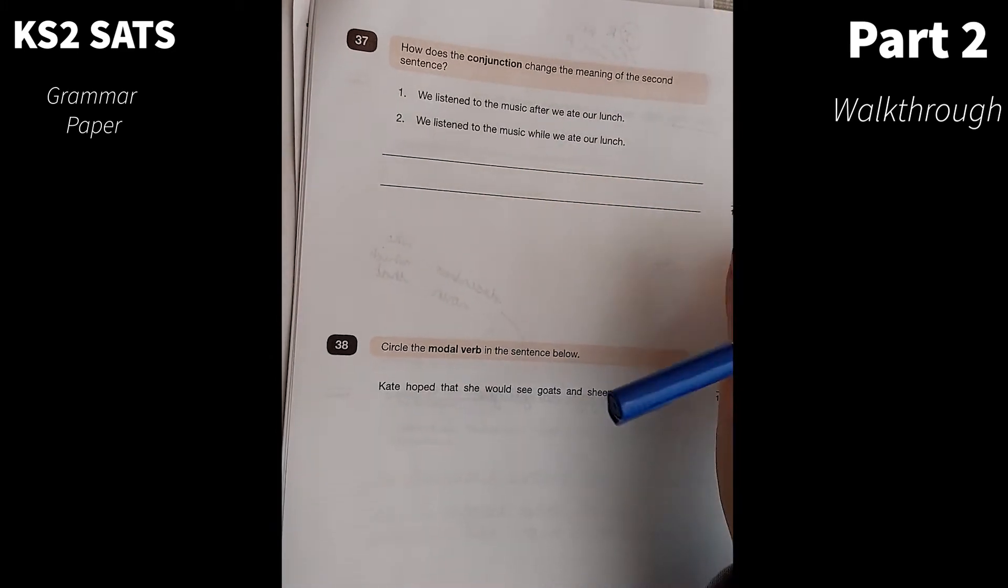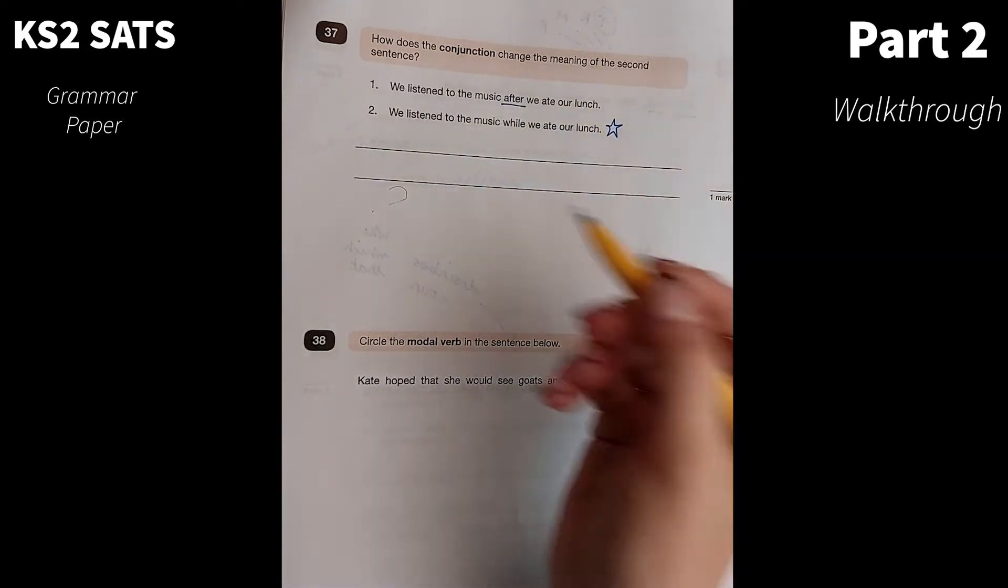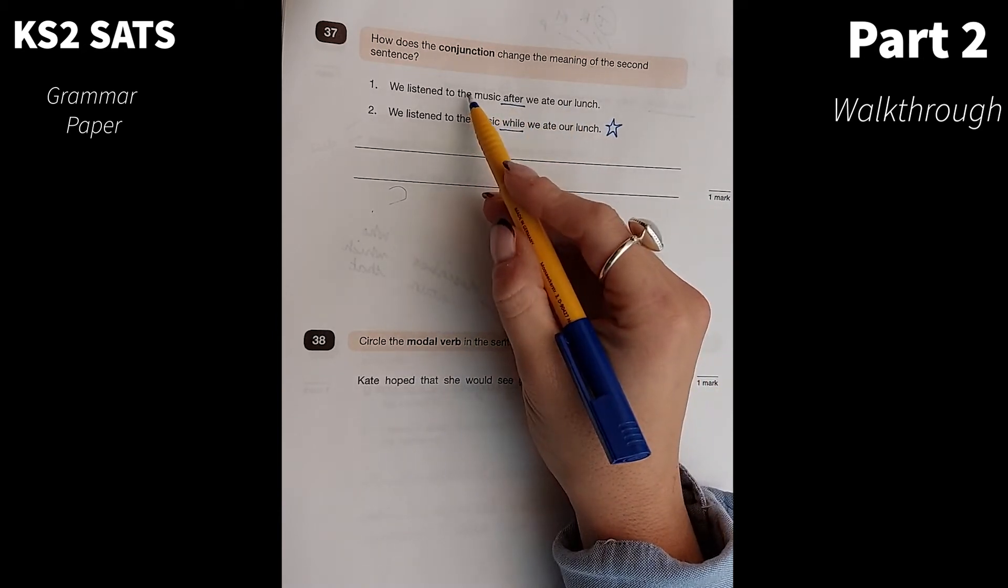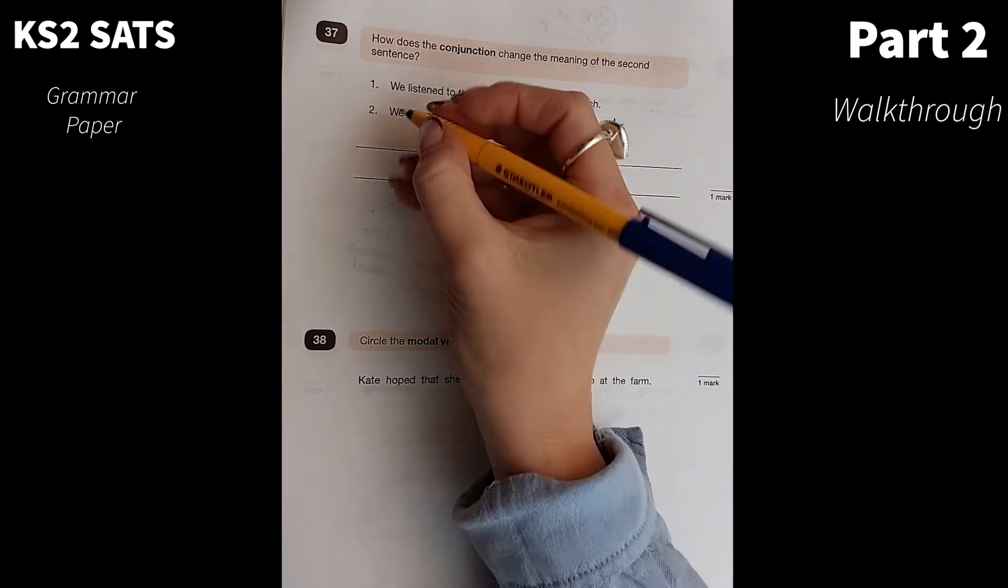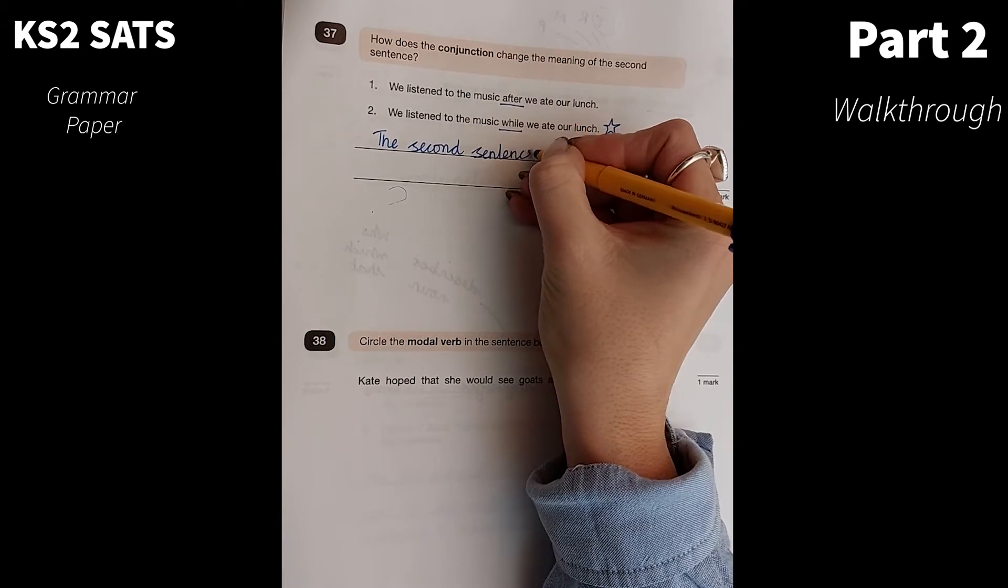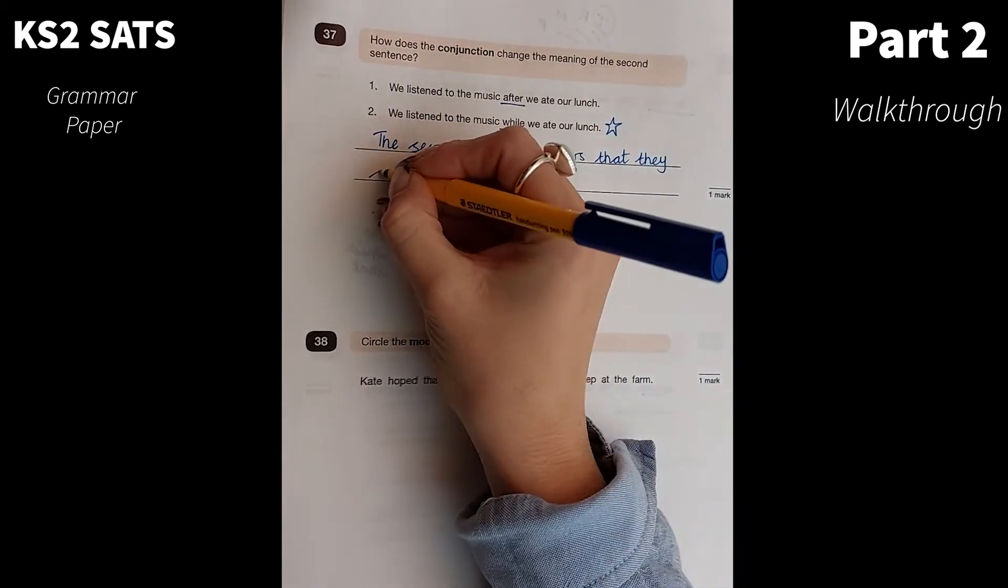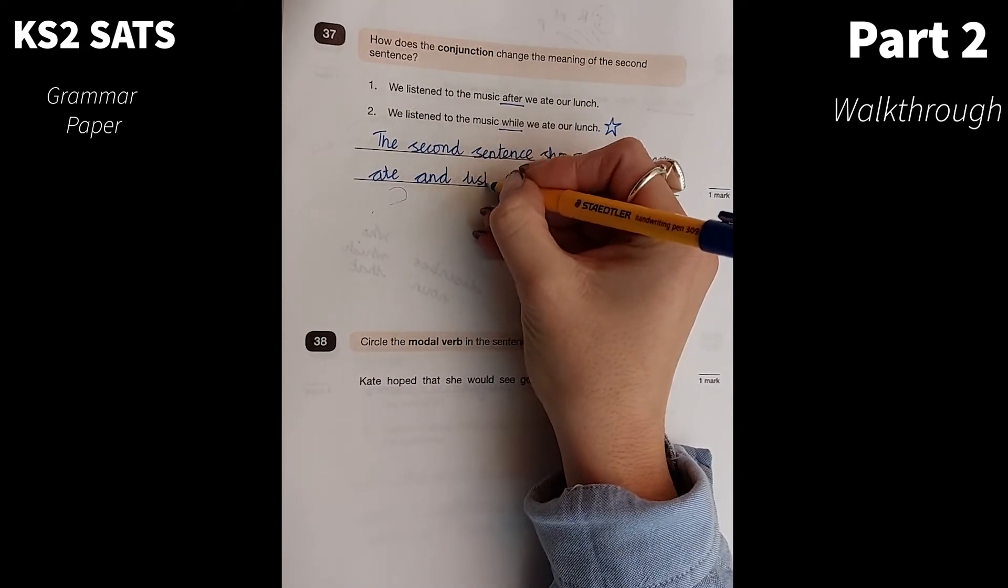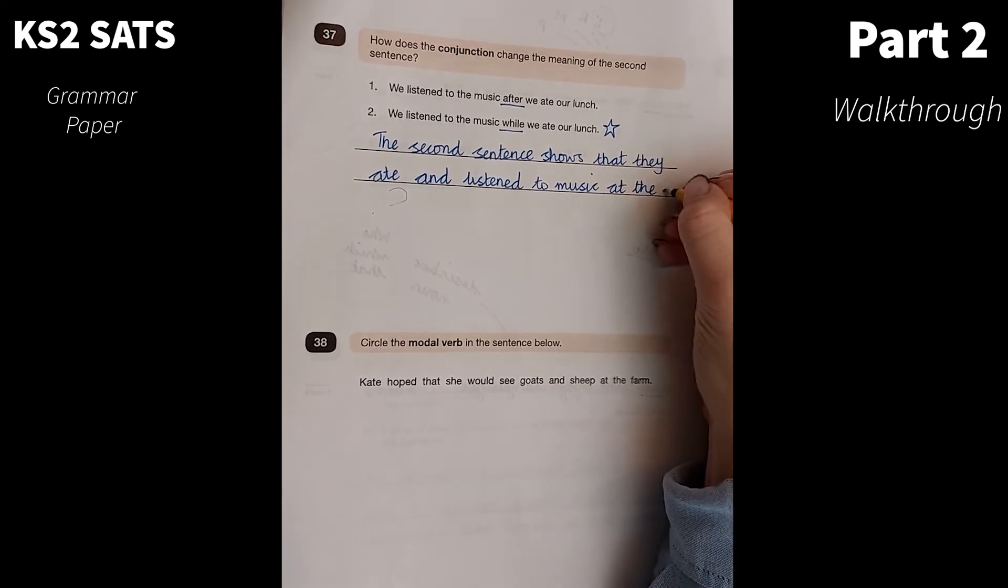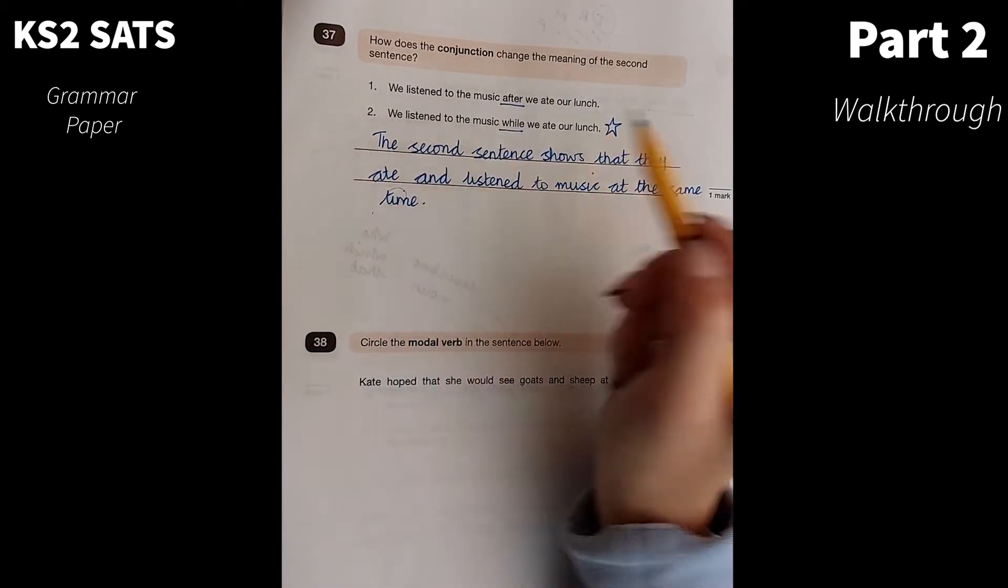Number 37. How does the conjunction change the meaning of the second sentence? We're looking at the differences between the two. We listen to music after we ate our lunch. We listen to music while we ate our lunch. After, that means that we listen to music once we've eaten. And the second one means we listen to music at the same time as eating. So the second sentence shows that they ate and listened to music at the same time. And then you could even say, whereas, in the first sentence, they ate their lunch and then they listened to music. So as long as you make that clear.